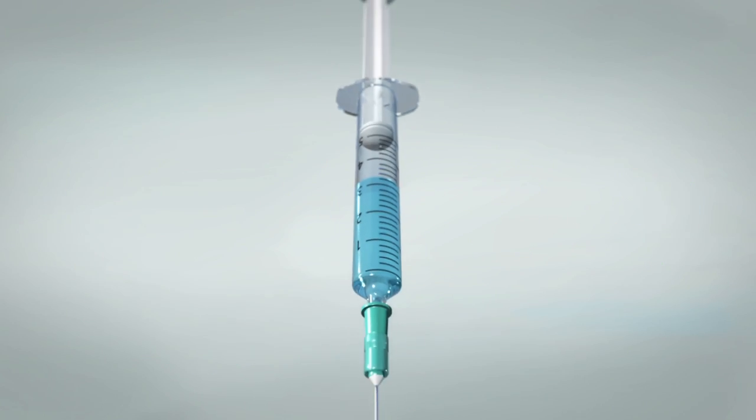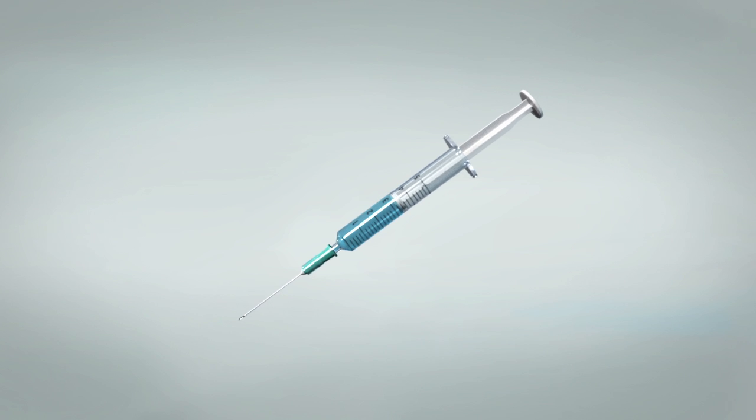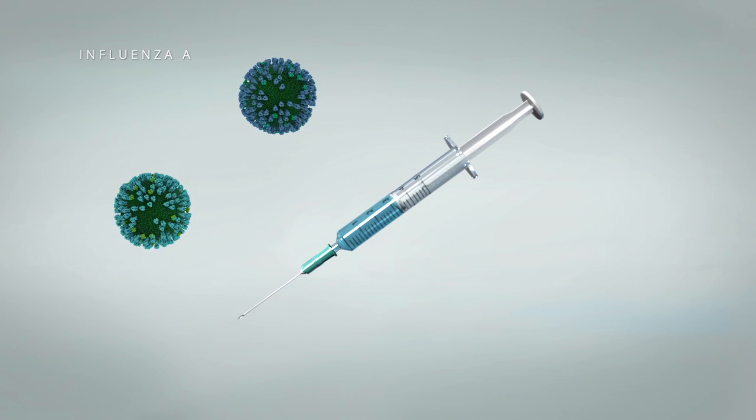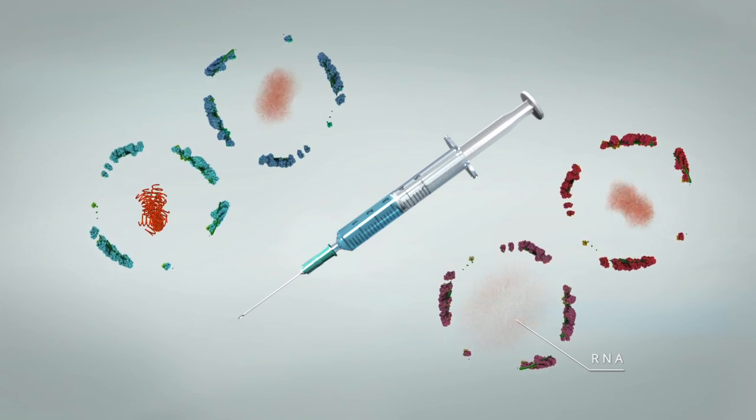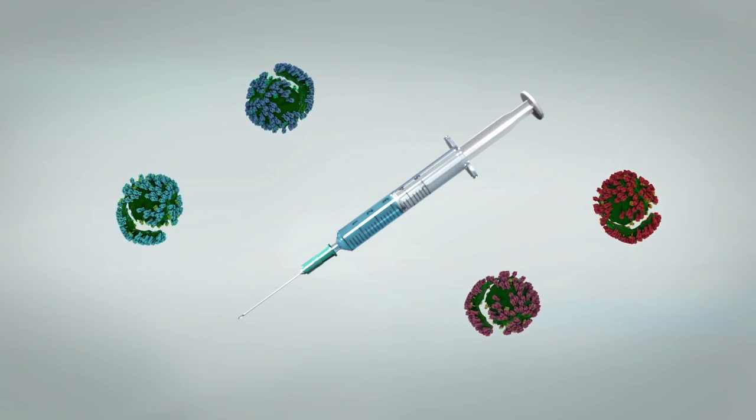The inactivated flu vaccine changes yearly and is made using two A strains and one or two B strains. The vaccine contains viral proteins and no viral RNA, thus rendering it non-infectious.